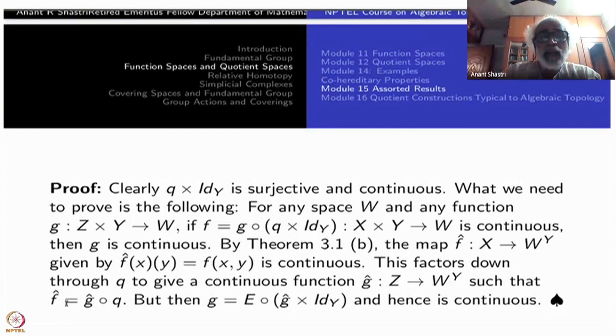Now this map F_* factors down through Q to give a continuous function Ĝ from Z to W^Y because Q is a quotient map and the beginning G itself is such that F itself is G composite Q for that reason it factors down to a map from Ĝ to Z to W^Y. Such that F_* is Ĝ composite Q. But then G which is E composite Ĝ composite identity. Therefore, if Ĝ is continuous, E composite is continuous, so G is continuous. And G is continuous. So we wanted to prove that G is continuous.